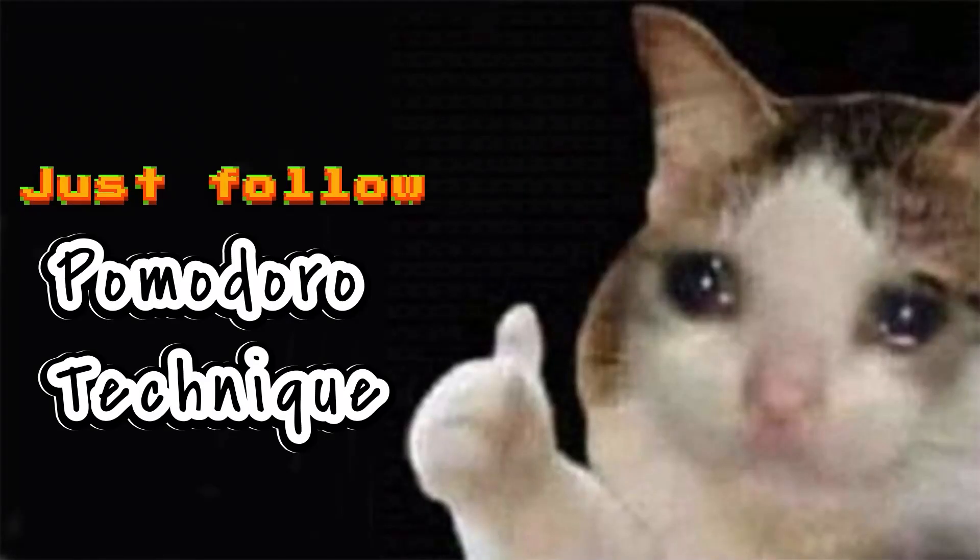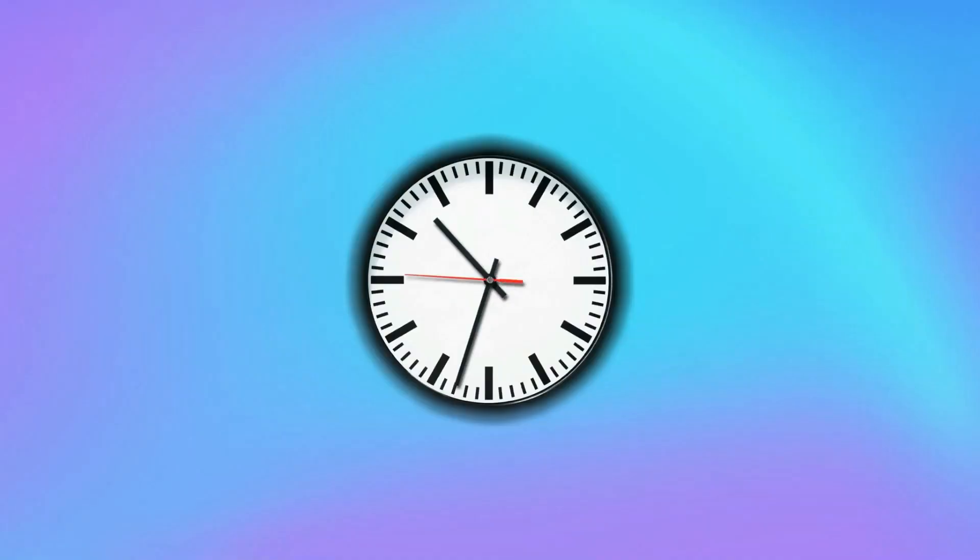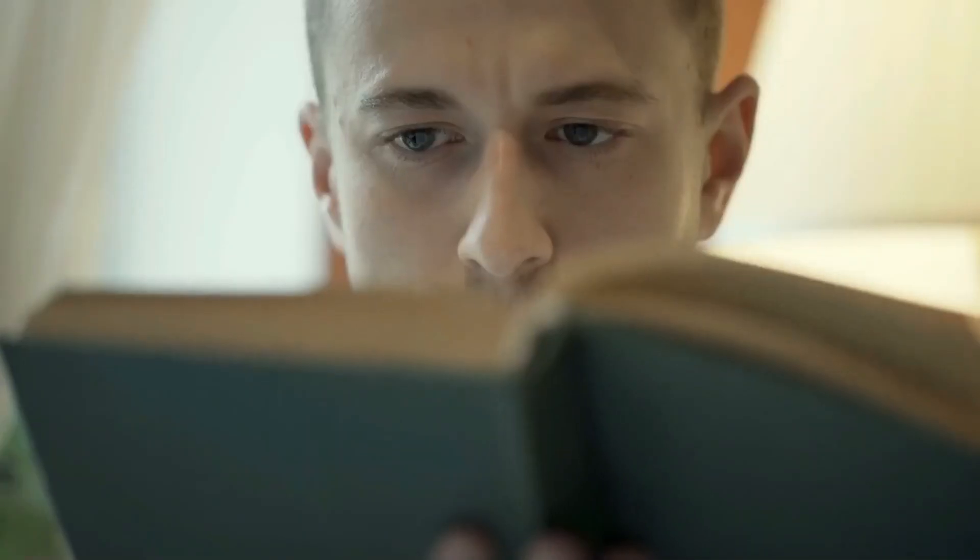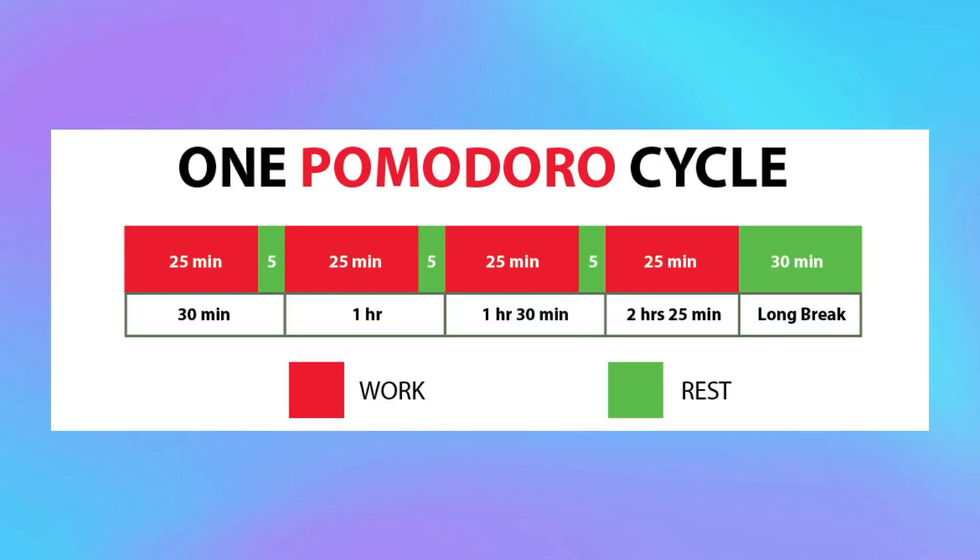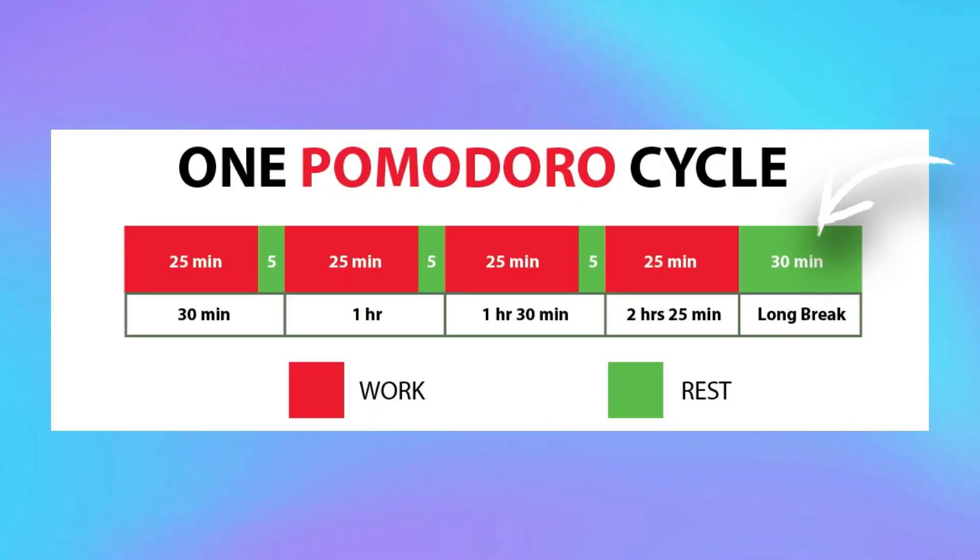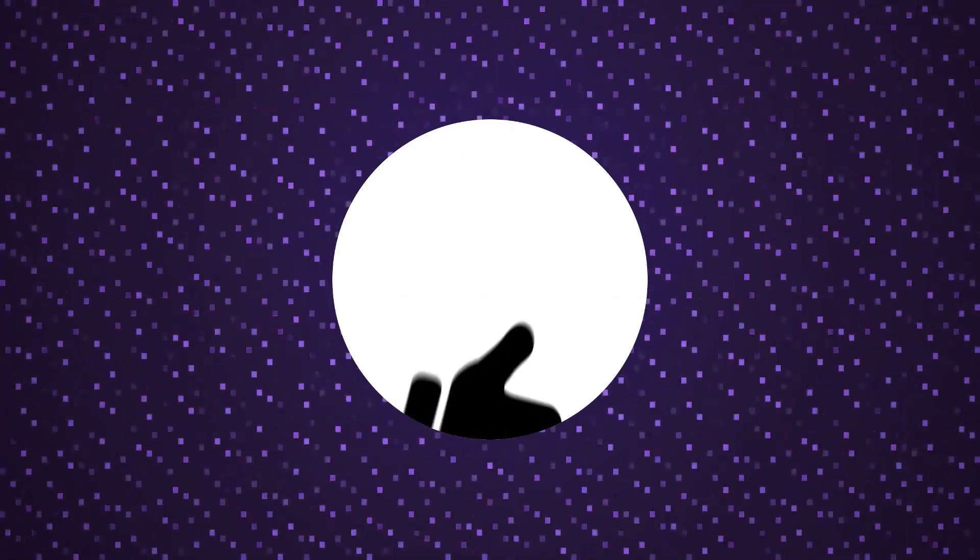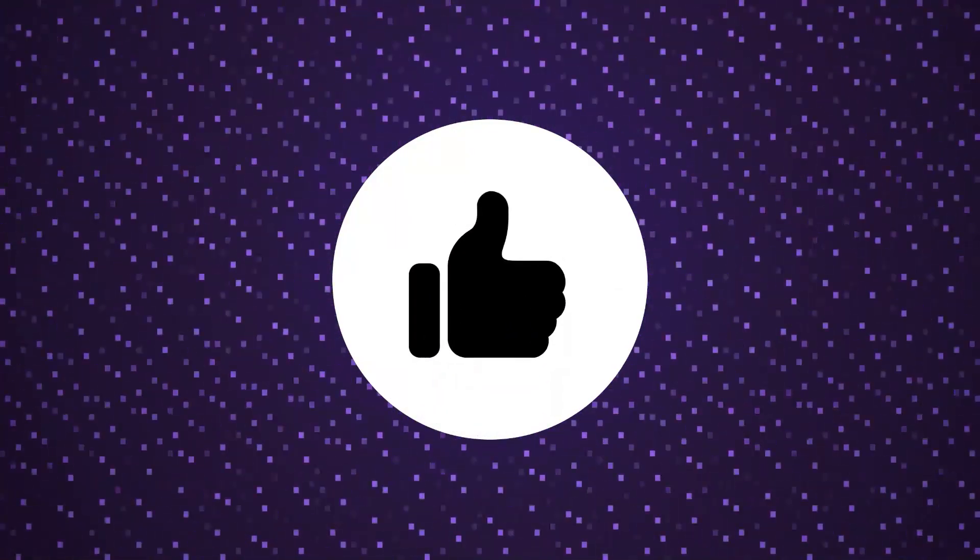So just follow the Pomodoro technique. Set a timer for 25 minutes, study with full concentration, and relax for 5 minutes. After 4 cycles, you can take a 30-minute break. This is one Pomodoro cycle. Try applying it in your daily routine and you will notice good results.